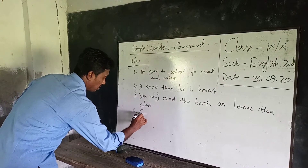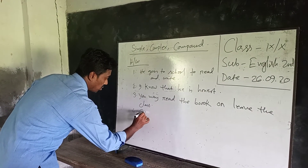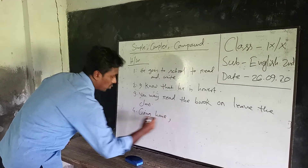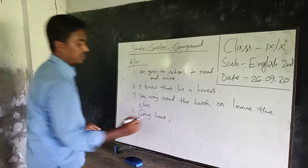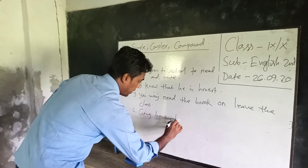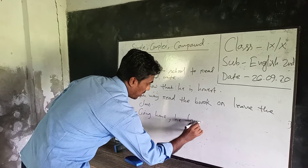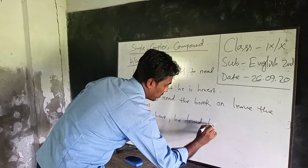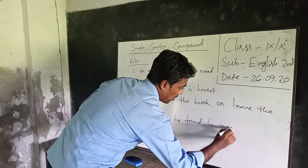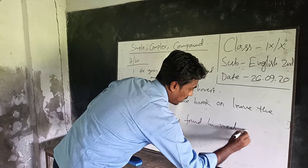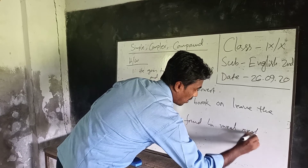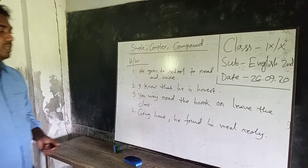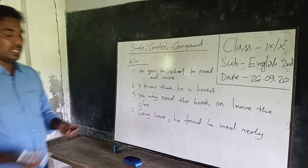Number 4: 'Going home, he found his meal ready.' Identify each of these sentences as simple, complex, or compound.